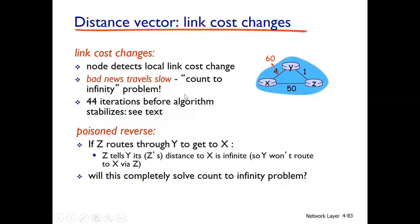Now, similarly, we can address this using Poison Reverse. The solution is: if Z routes through Y to get to X, then Z tells Y its distance vector to X is infinite.